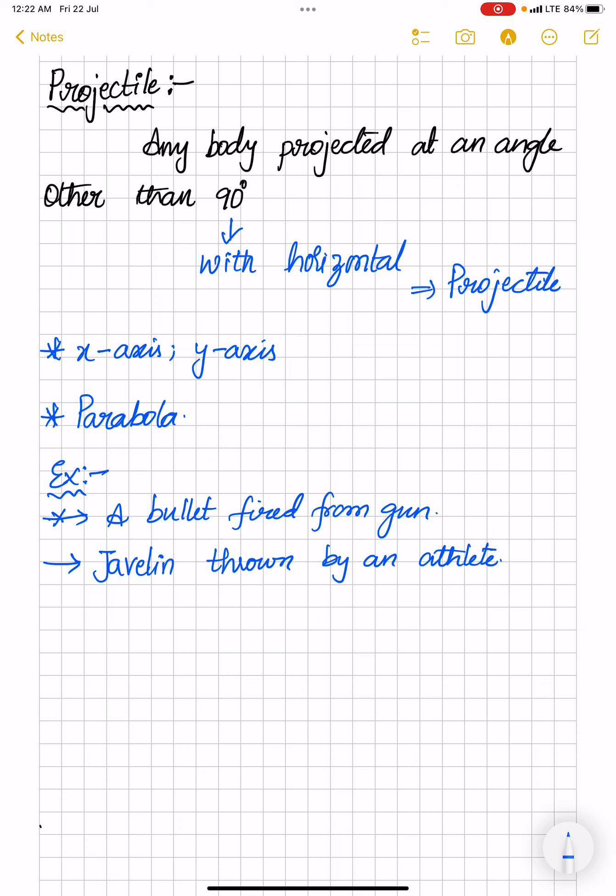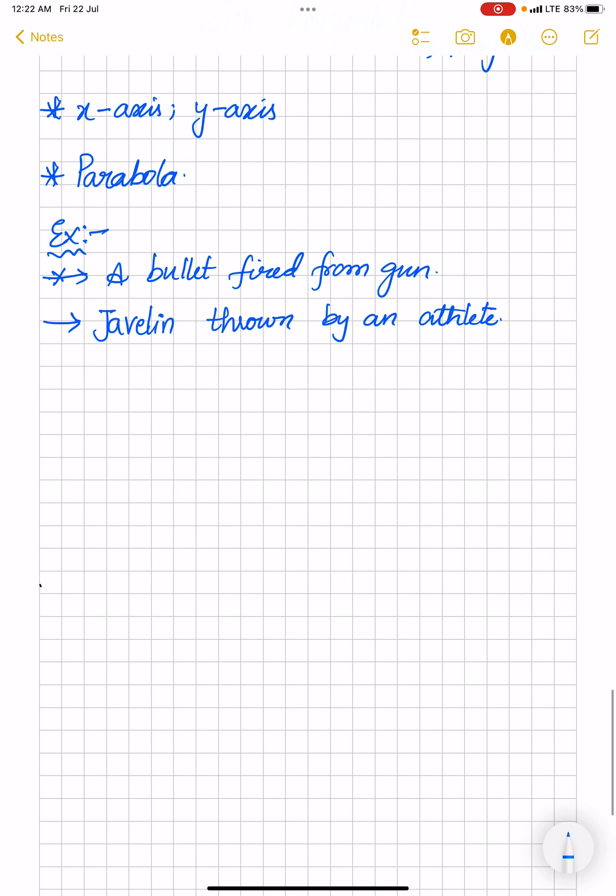So this is your projectile. And there are few assumptions about this projectile, which you need to be taking into consideration. And then only you can understand the motion of this particle and you can study easily. So what are those assumptions? I would like to mark it with red so that you can easily remember.